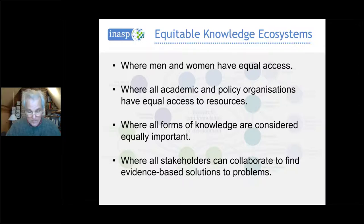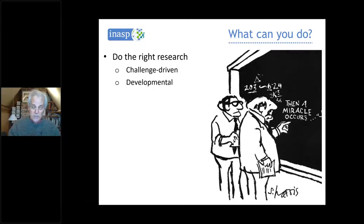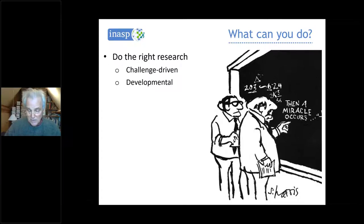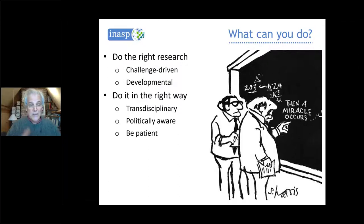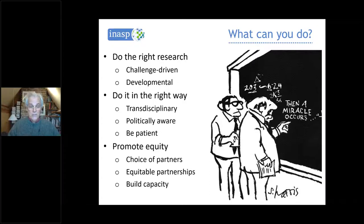So if you're a researcher wanting to do international development research in a way which is likely to have some impact, what can you do? First, do research on the challenges faced in developing countries rather than academic questions which emerge out of international development as a theoretical concept. Make sure the research is contributing to developmental problems. Do it in the right way — I've talked about transdisciplinarity. Be politically aware. Be patient — it does take a long time to get results. It's very unlikely that you and your research alone will have an impact; it's about collaborating with others, sharing results and working together.